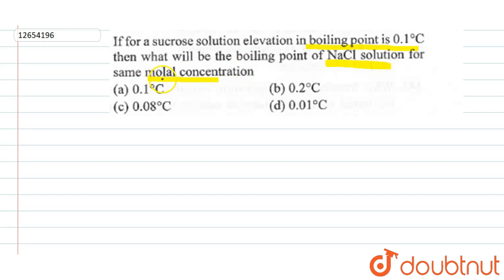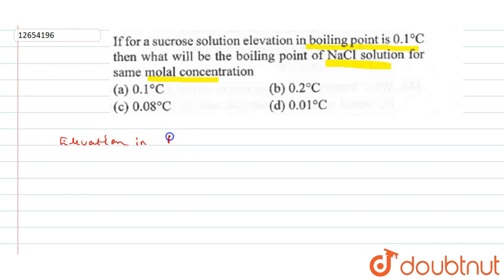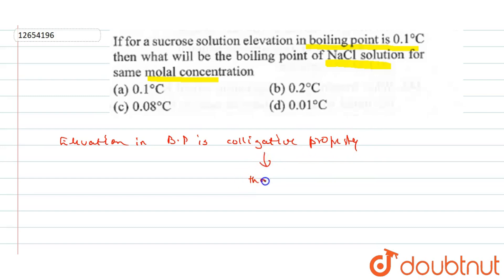Alright! So what is this case? What is our elevation in boiling point? Elevation in boiling point is a colligative property. What is a colligative property? The number of particles determines the colligative property. Elevation in boiling point is 0.1 degree centigrade — it depends upon the number of particles.